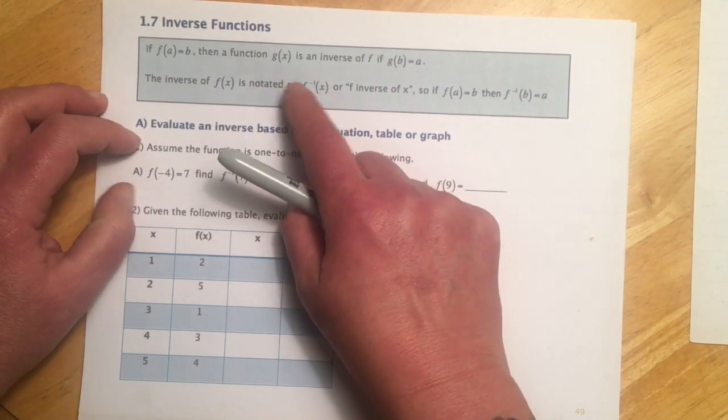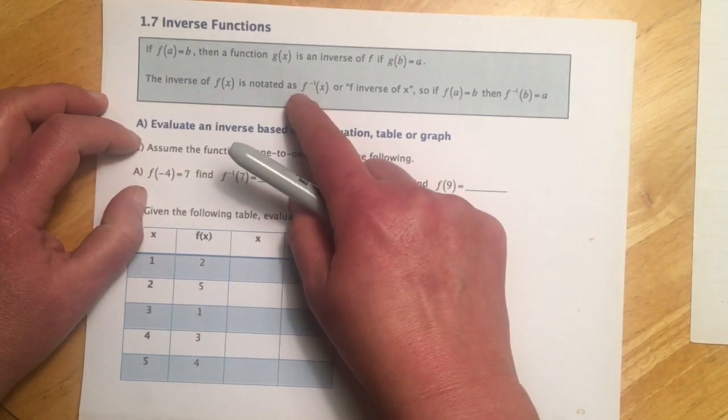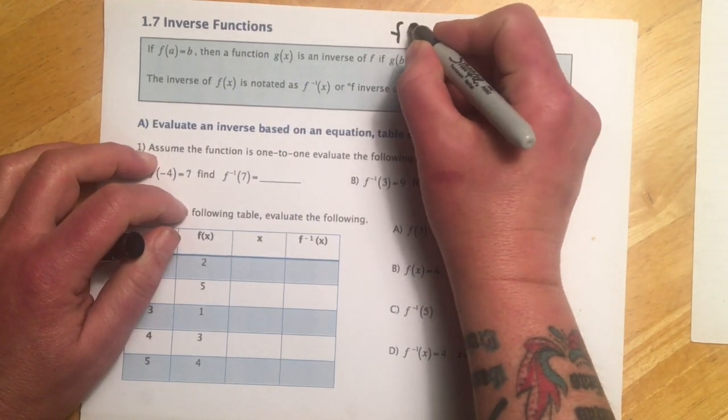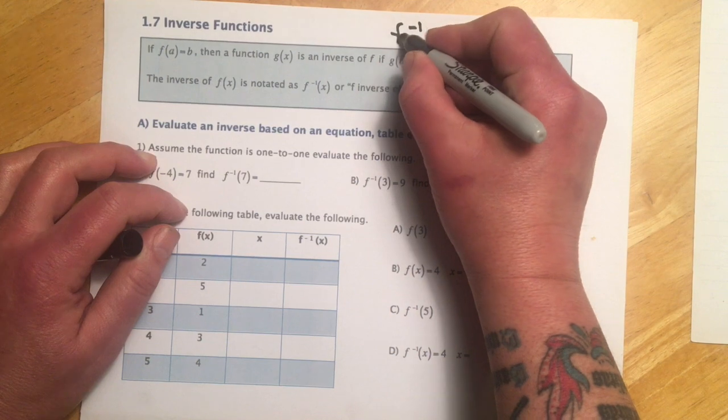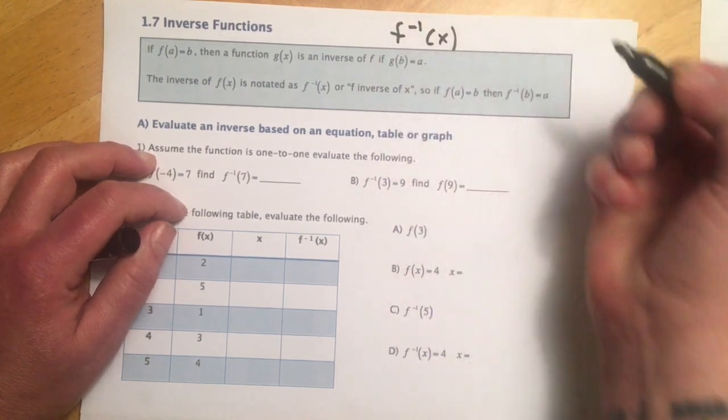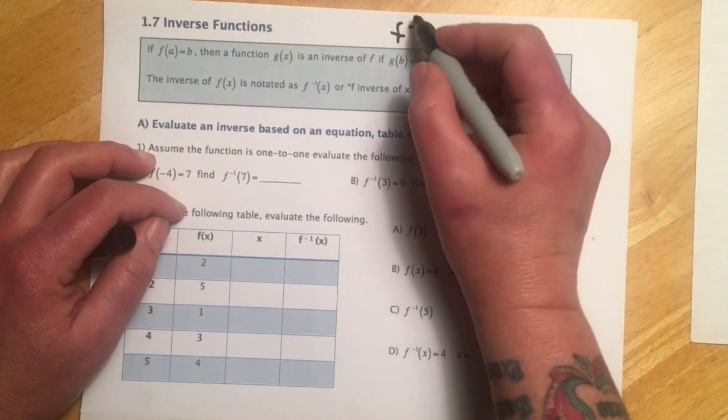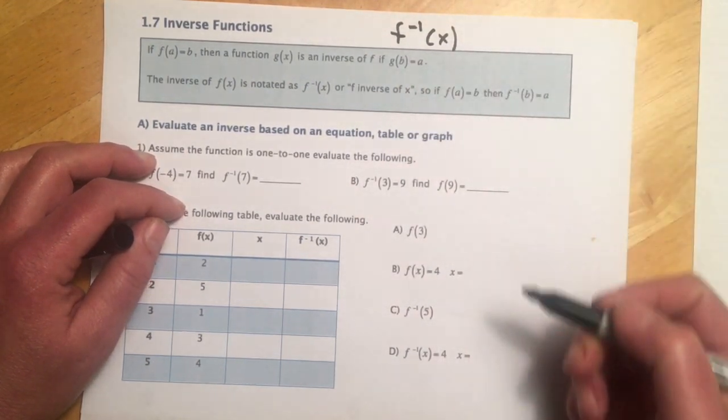Notation wise, we say the inverse of f of x is noted as f, and then I don't know if you can see this in the thing, so I'll write it a little bigger. It looks like a little exponent, negative 1x. And so it's not any kind of 1 over, it's not an exponent at all. It just reads f inverse x is all.